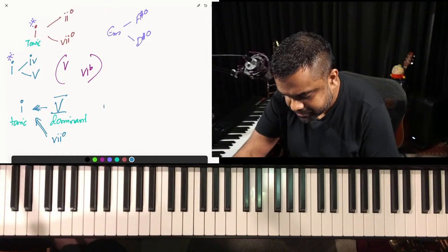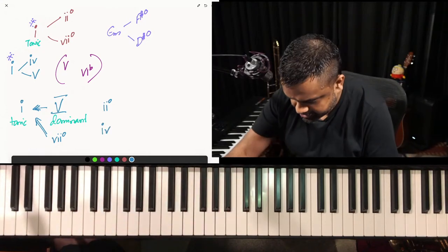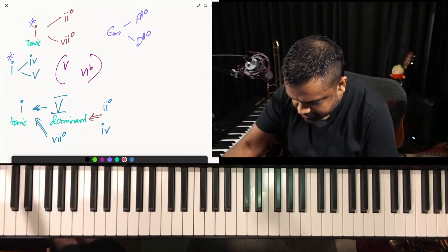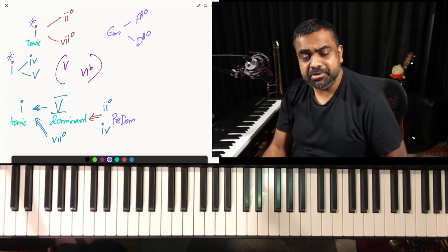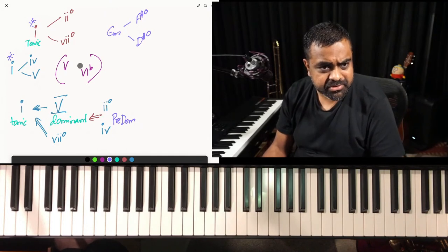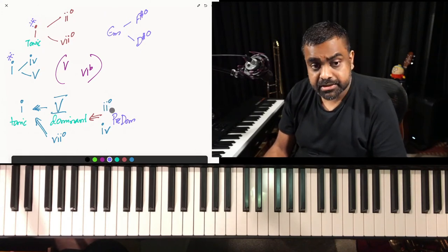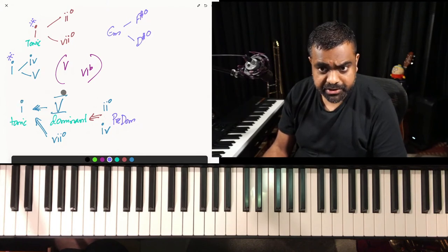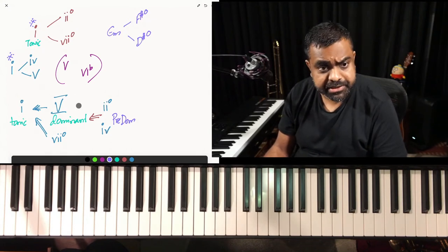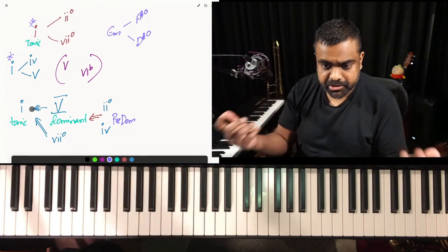You can also have chords that build anticipation — these are called predominant chords, in this case the two diminished and the four minor. They seem to want to go to the dominant chords. Two diminished to five major to one minor gives you a very common two-five-one minor chord progression. Or four minor to five major to one minor — all these options are available.